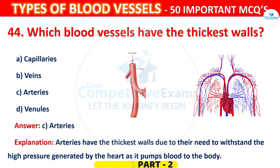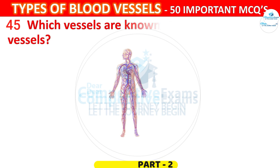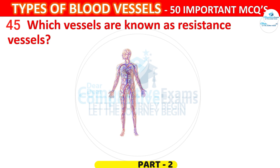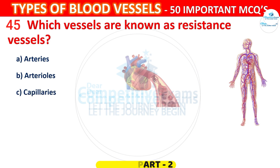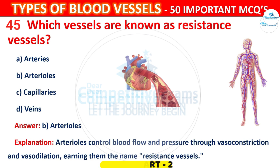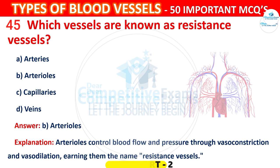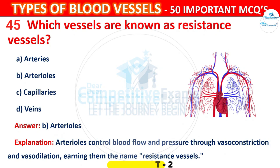Question 45. Which vessels are known as Resistance Vessels? Options: Arteries, Arterioles, Capillaries, or Veins. The correct answer is B, Arterioles. Arterioles control blood flow and pressure through vasoconstriction and vasodilation, earning them the name Resistance Vessels.